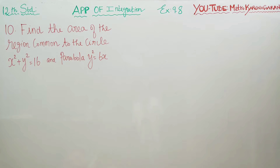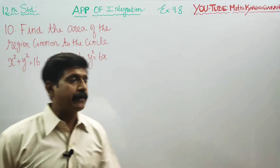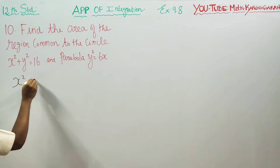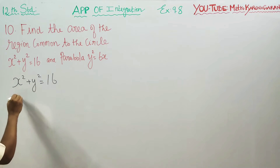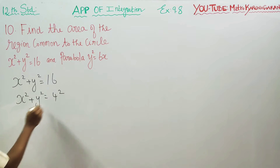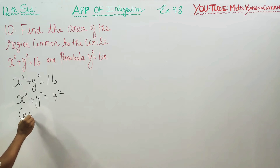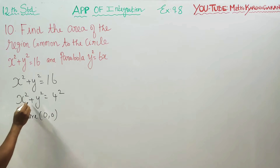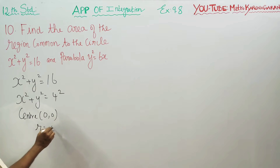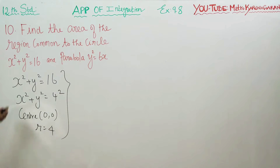Dear 12th standard students, in exercise 9.8, sum number 10, find the area of the region common to the circle and the parabola. For the circle: x² + y² = 16. This matches with the formula x² + y² = 4², so the circle has center (0, 0) and radius 4.